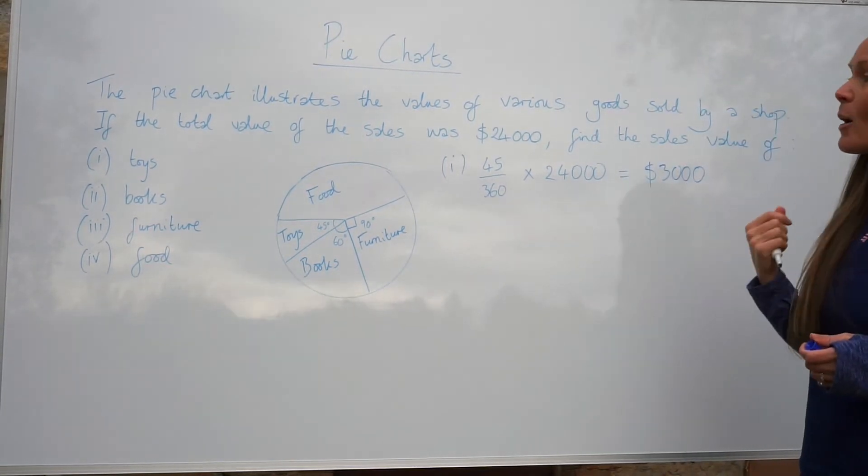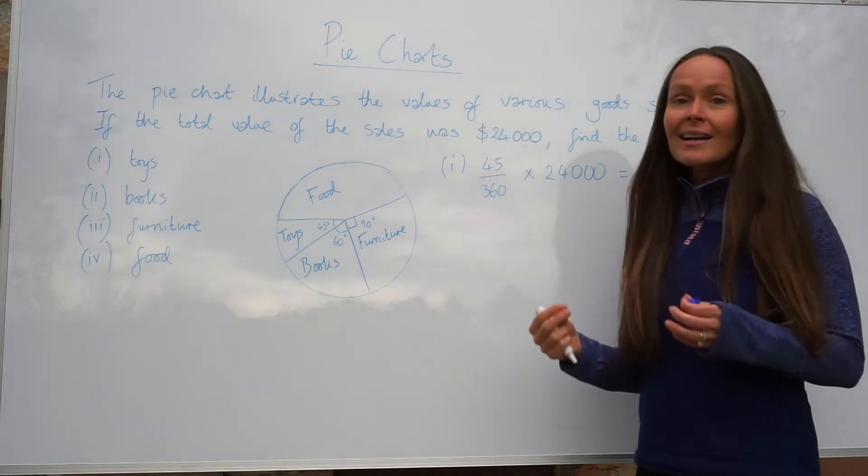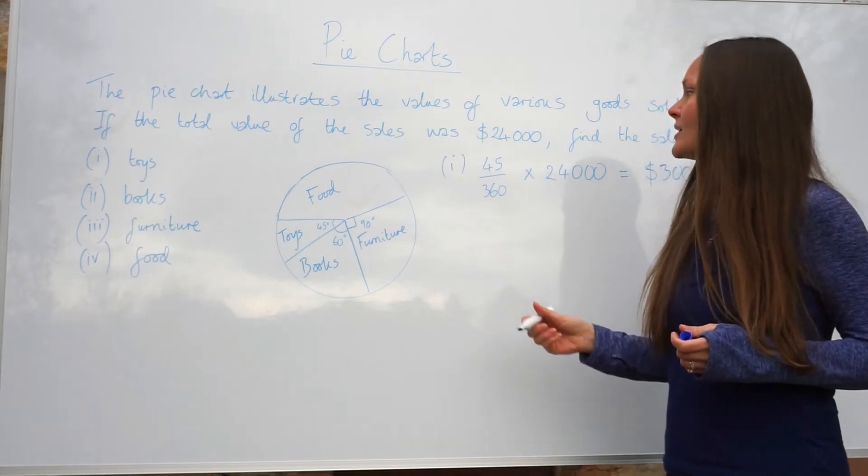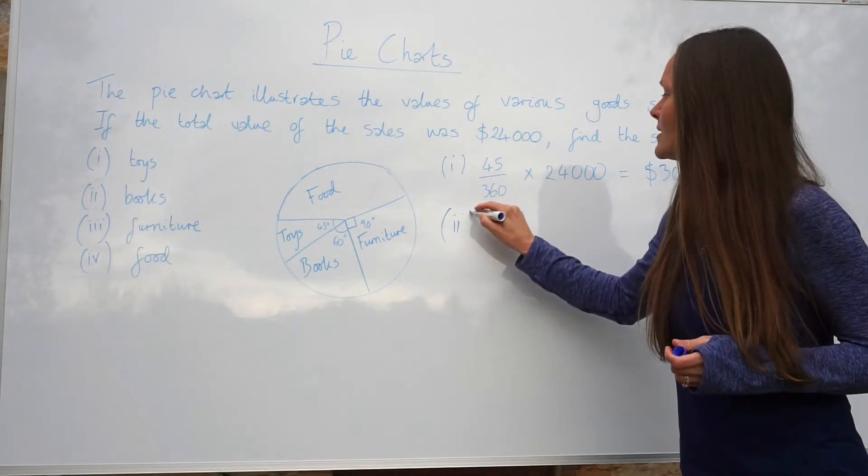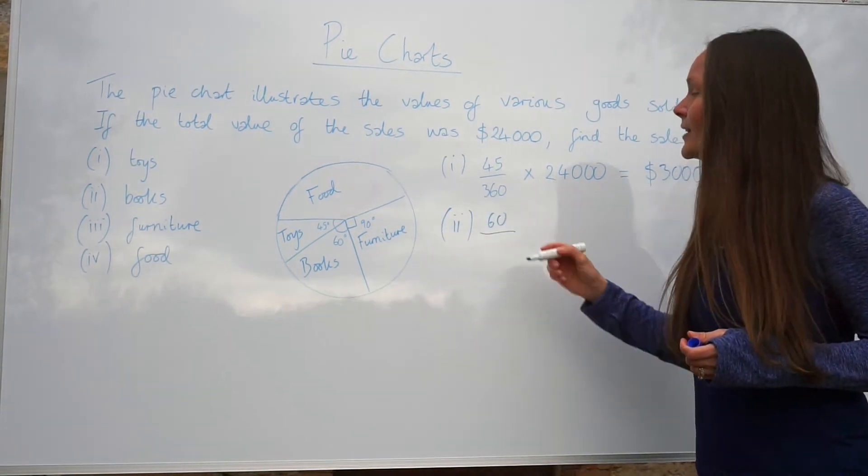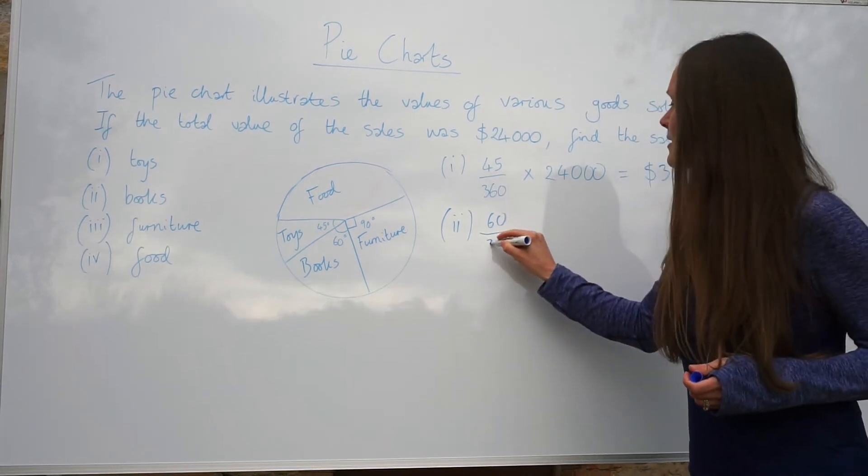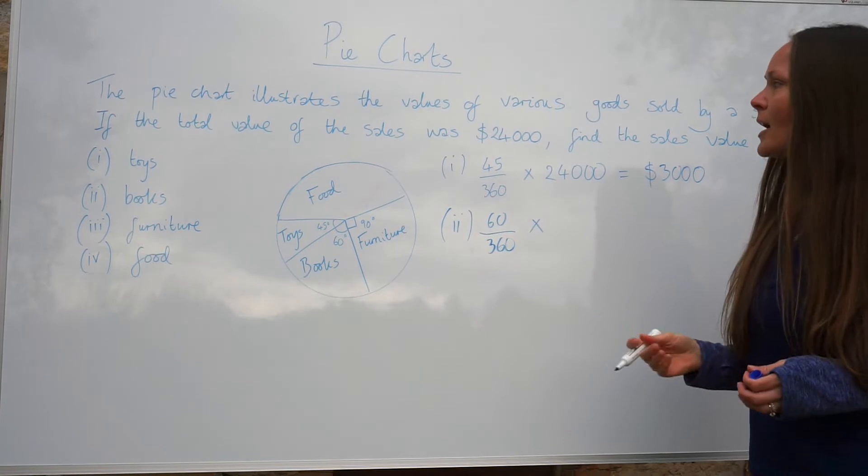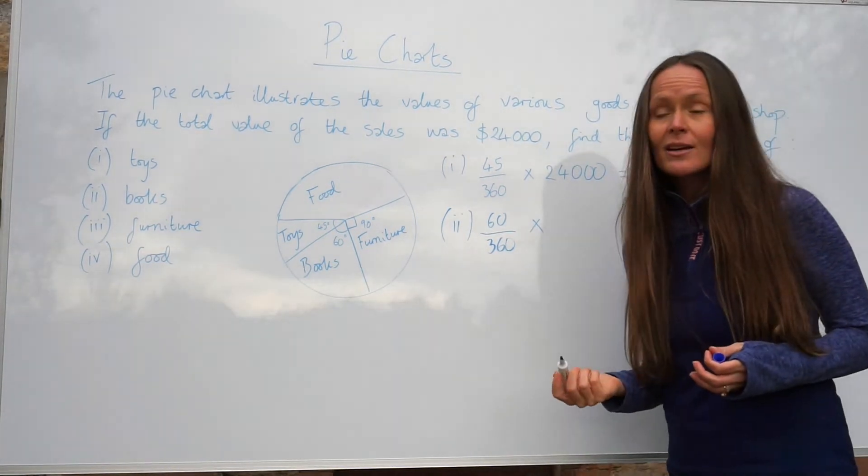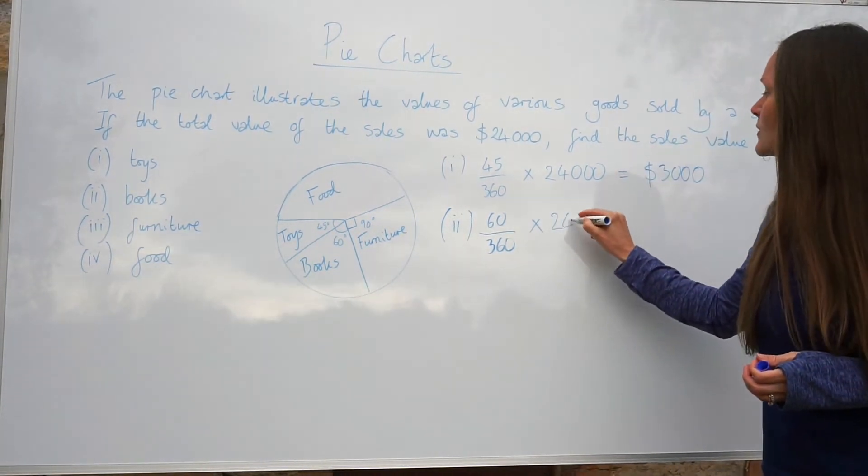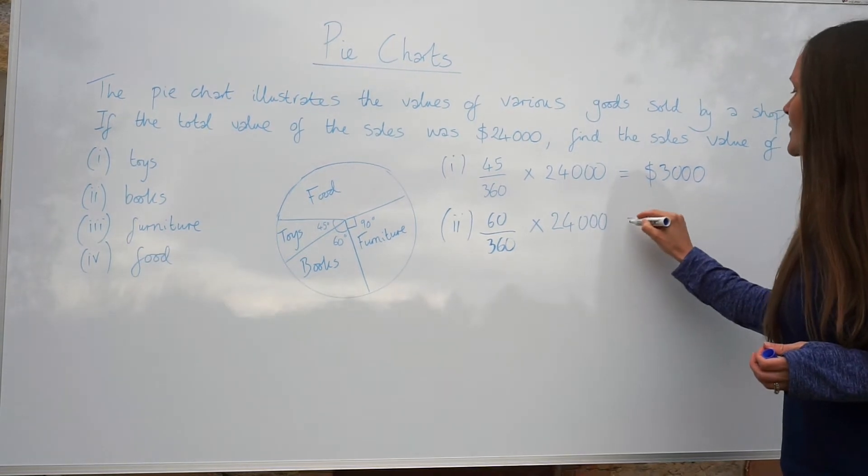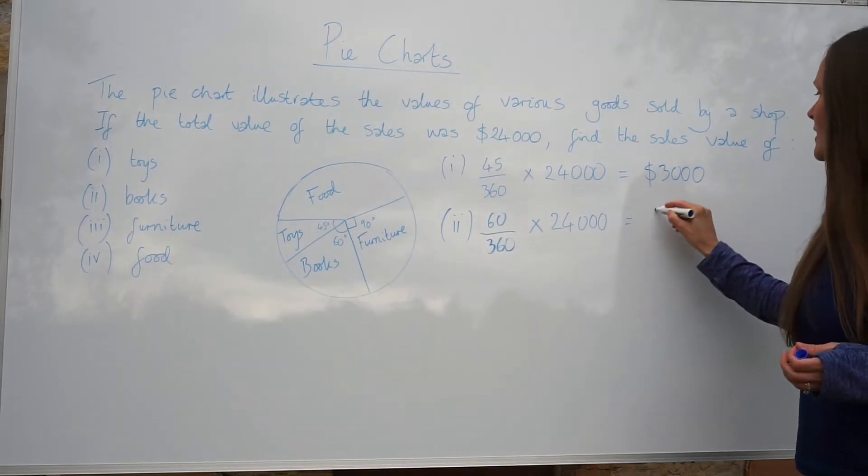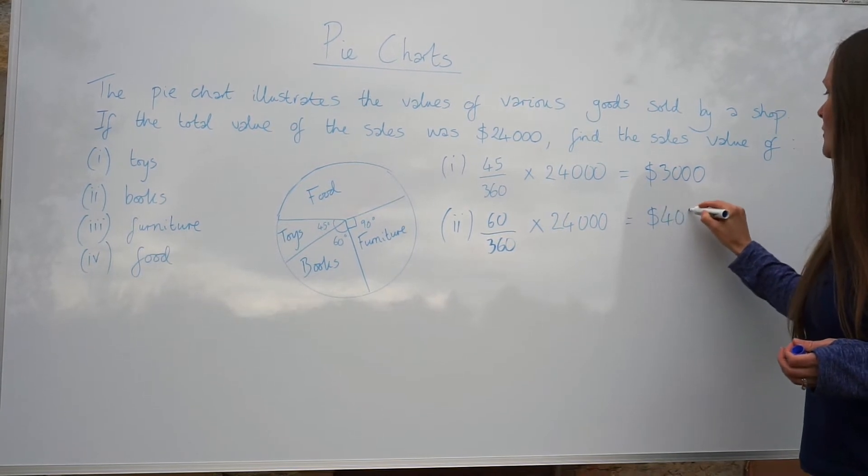For the next part, books, you use exactly the same concept. You need to find out the fraction sold for books. So you take the number of degrees, so 60, and again you write it out of 360. So the denominator is always the same. And then again you multiply by the total value of sales, $24,000. So this time when you multiply this fraction by $24,000, you get $4,000.